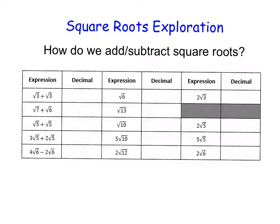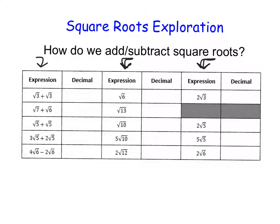In this first column, we have the square root of two different numbers being added. Then we have two separate columns: one where we've taken those two numbers, added them together, and placed them underneath the square root; and another where we've written something like two square roots of three, or five square roots of five. Notice that these on the right-hand side have a coefficient, and these do not. So take a minute and fill those in.